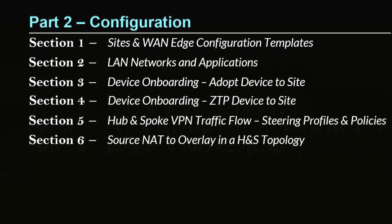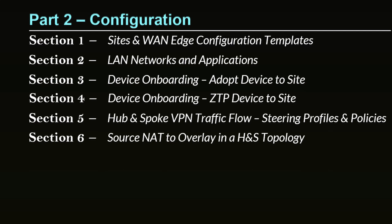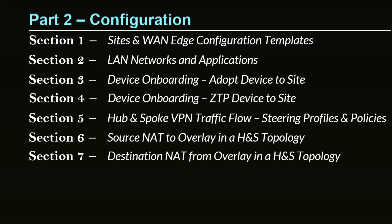Section six is where we'll start looking into how to configure source NAT to overlay. This is for specific use cases where you have overlapping IPs in each and every site that are all going to be talking to some resources and workloads in your data center behind the hub. Section seven is destination NAT — the other way around — where the hub or some management stations would like to access different LAN segments that have overlapping IPs in each of your sites.